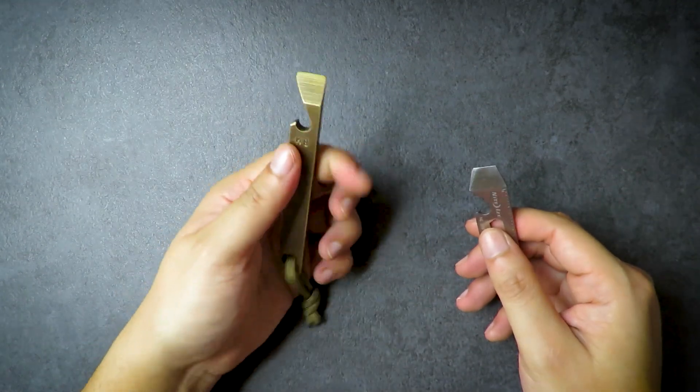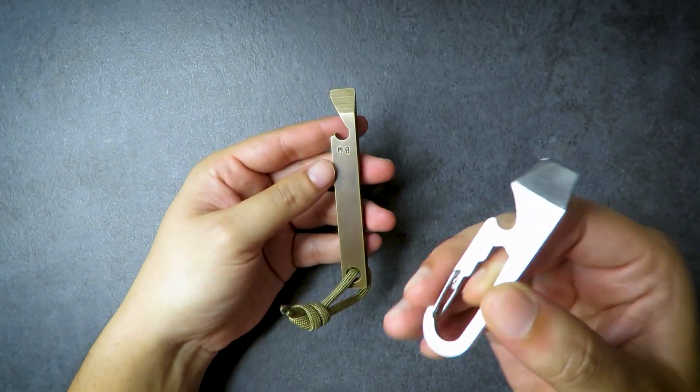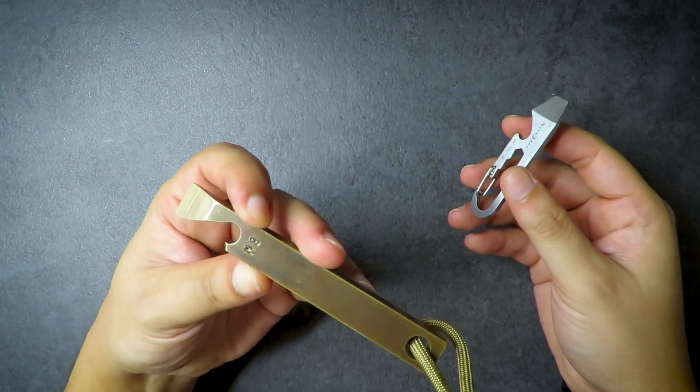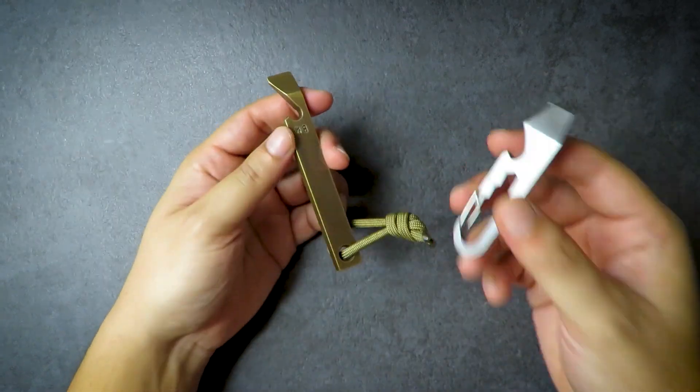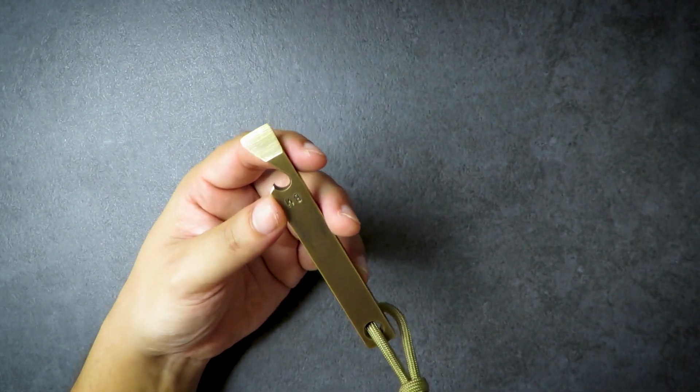It also has a bottle opener, can also be used to pry, and it has a scraping surface as well. So just to show you guys the difference between what a brass pry bar like this that's custom made versus this guy right here. I don't know if this is custom or in production, but it's made in small quantities versus something that's more mass-produced.